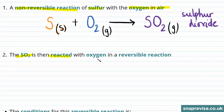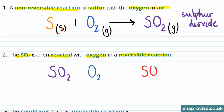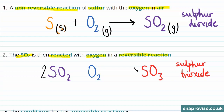Sulfur dioxide reacts with more oxygen in a reversible reaction. So we have sulfur dioxide, SO2, reacting with more oxygen from the air in order to produce SO3, which is sulfur trioxide. We can balance this equation by adding 2s in front of sulfur dioxide and sulfur trioxide. This is a reversible reaction in which all of the reactants and products are gases.